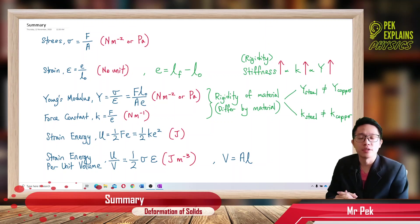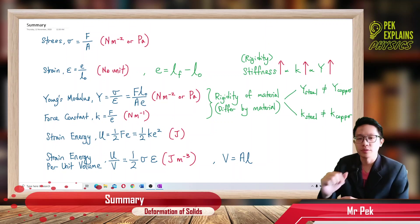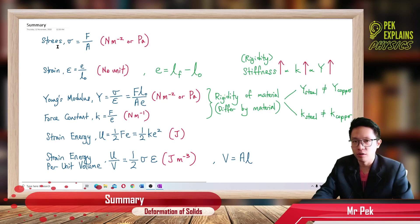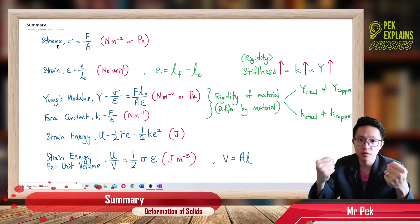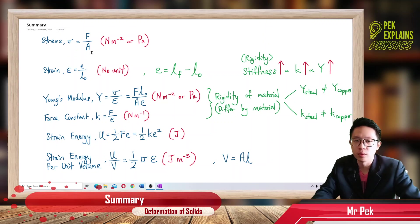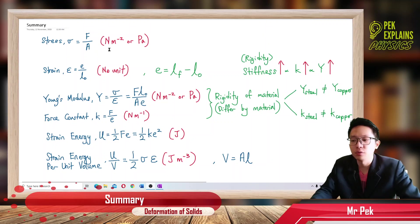Alright everyone, now we shall start the chapter Deformation of Solids. I want to summarize this chapter. So in this chapter, you will learn about stress. Stress is when a wire or a steel rod is being pulled by a certain force, so the wire will experience a stress. Stress is force over cross-sectional area. Force is Newton, area is meter squared.